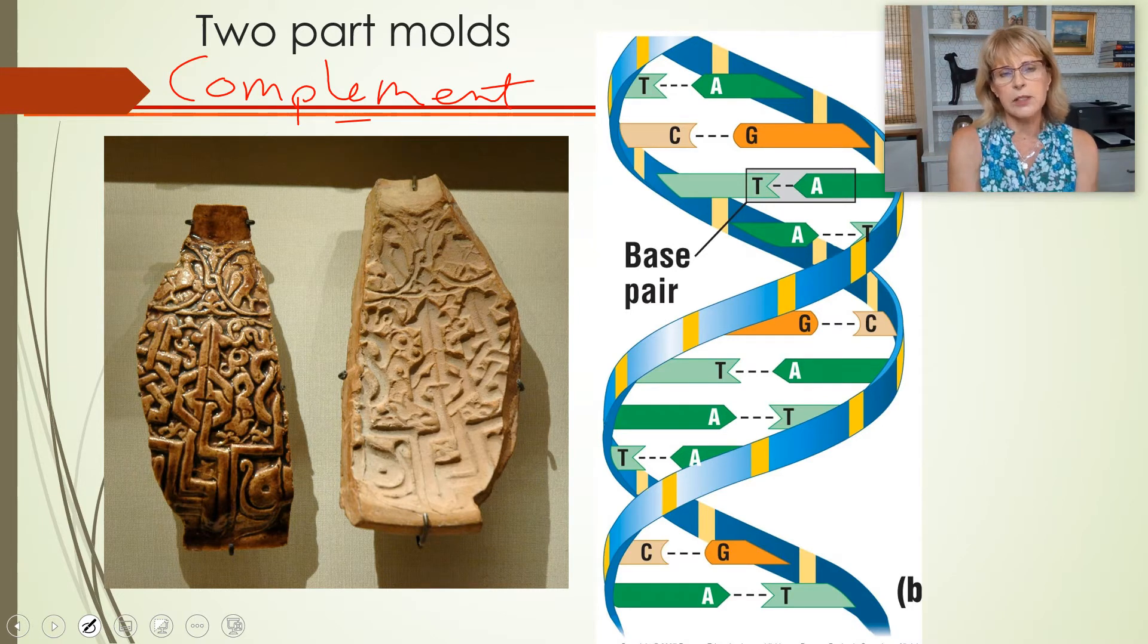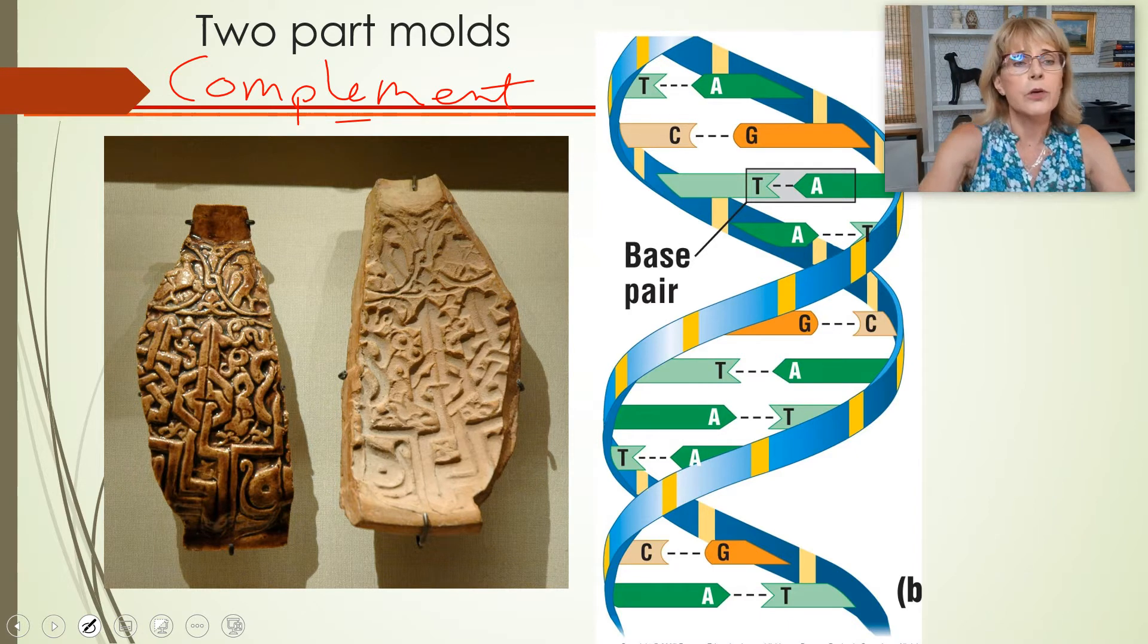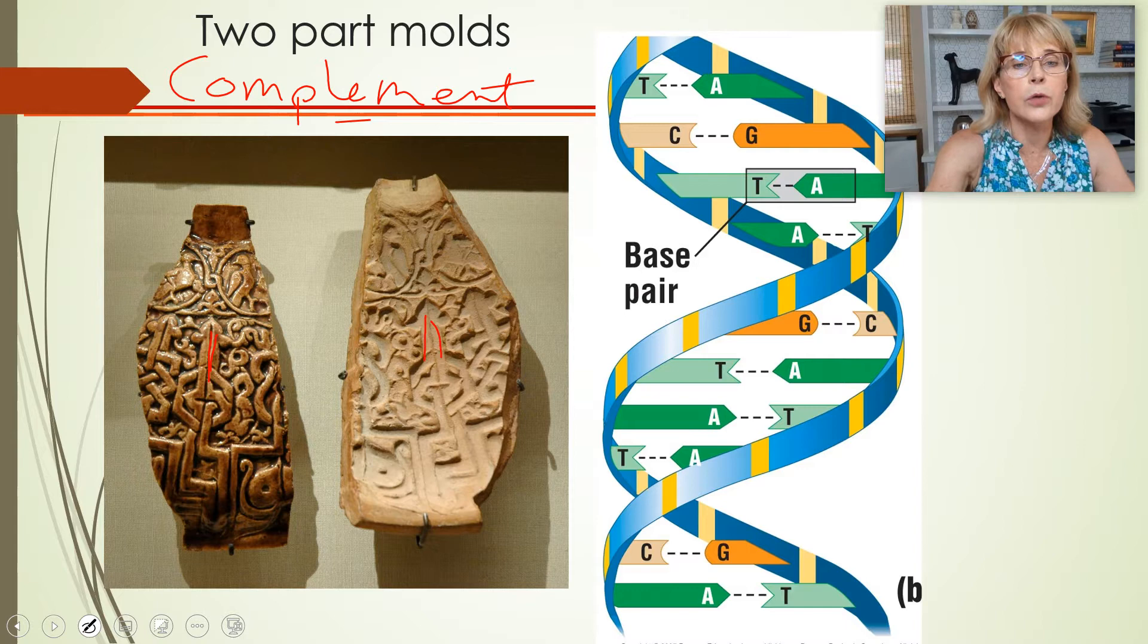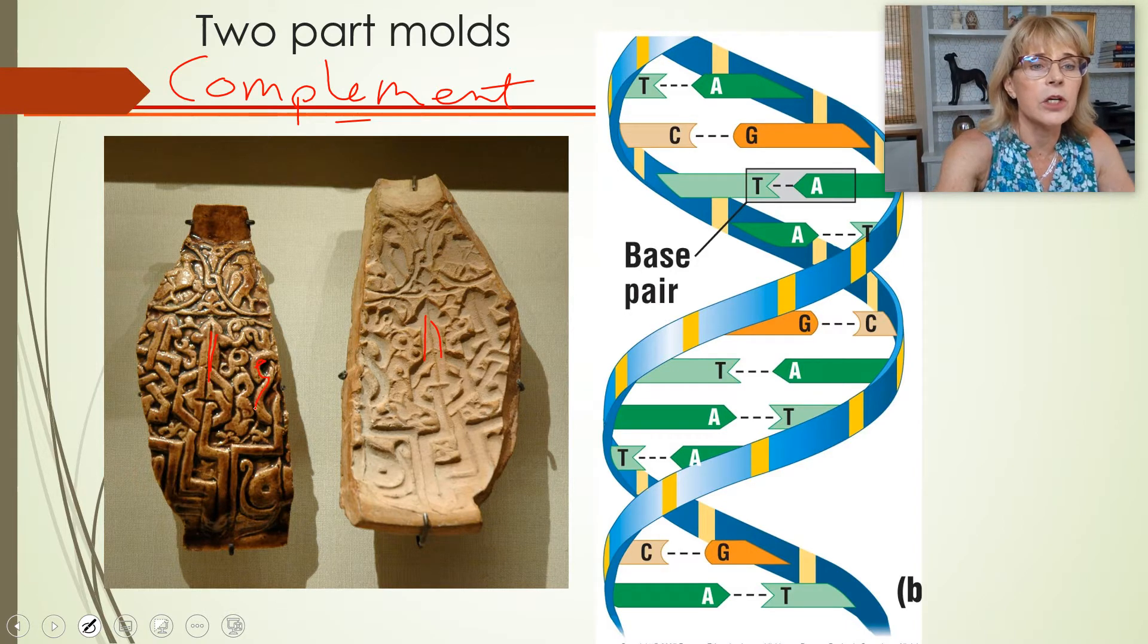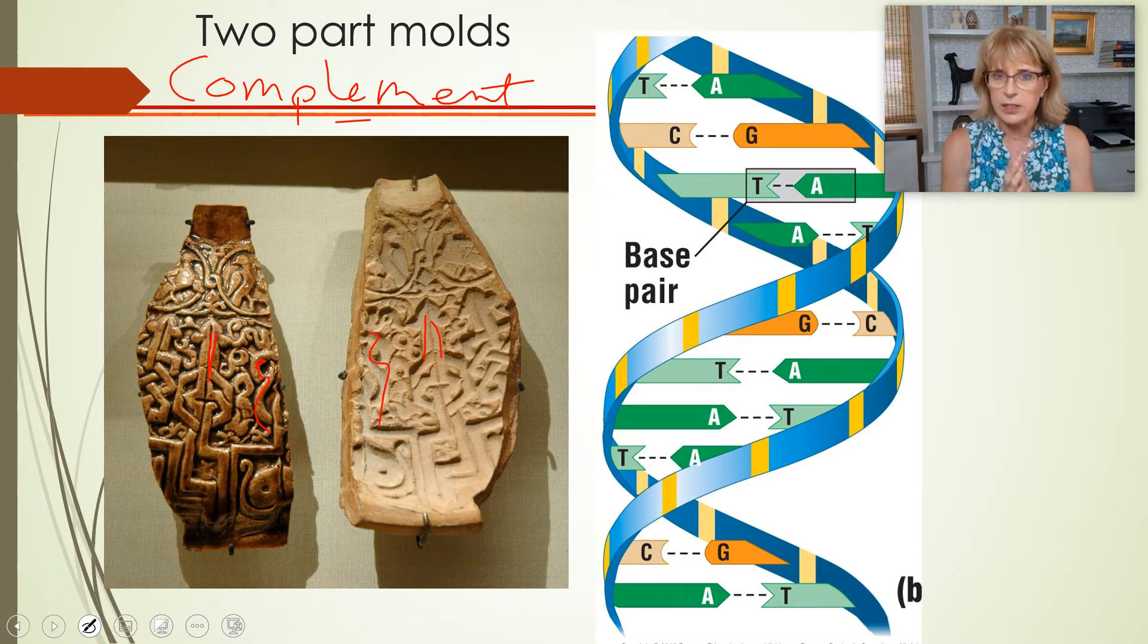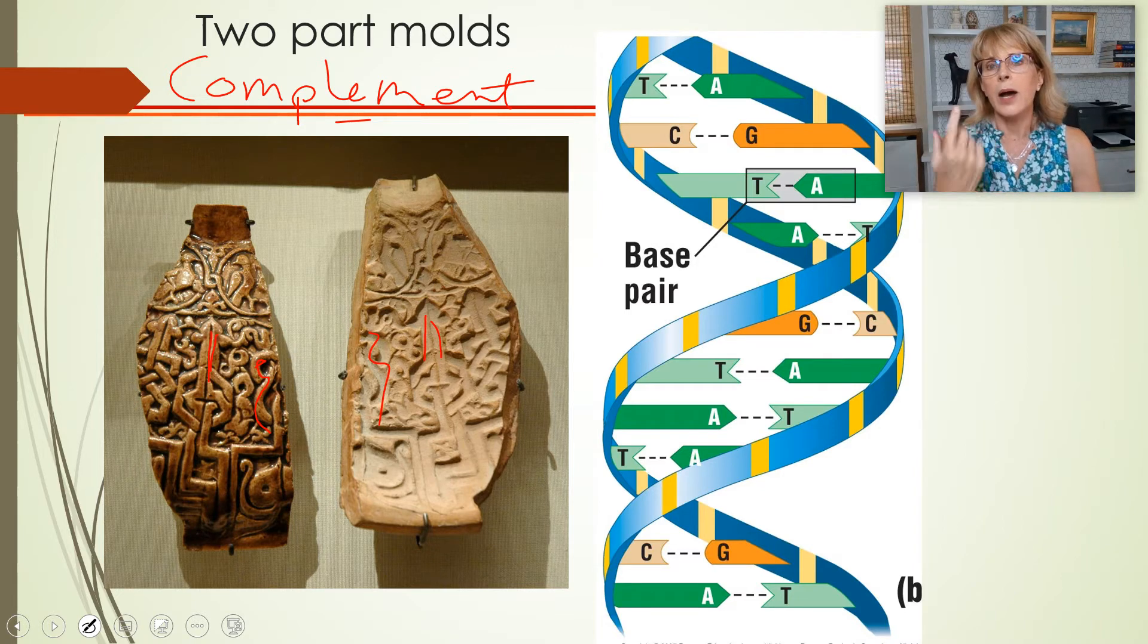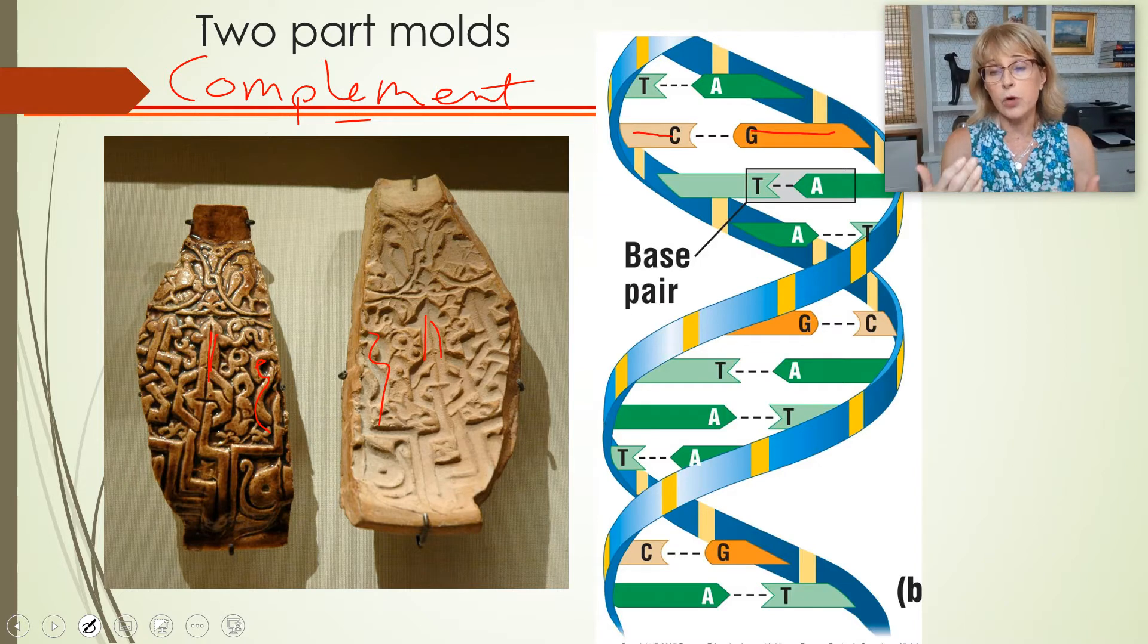Complement means they fit or they match or they go together. The two things, the piece of pottery and the mold, they're not identical. They're not copies of each other, but they're not random. They fit together. So if we look over here, everywhere that we see a straight ridge over on the mold, we see a straight groove. And everywhere on the pot we see a curvy ridge, over here we see a curvy groove. They fit together.